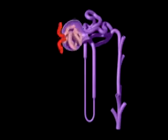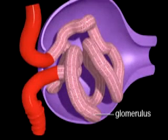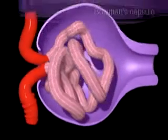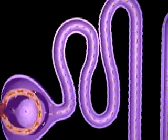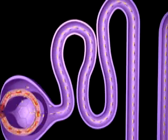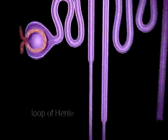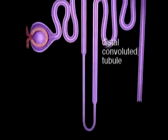The renal corpuscle has two parts: a spherical capillary cluster called the glomerulus, and a cup-like container called Bowman's capsule, which surrounds the glomerulus. The renal tubule has three contiguous sections: the proximal convoluted tubule, the loop of Henle, and the distal convoluted tubule.